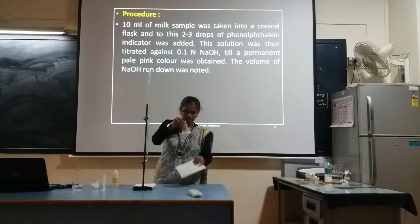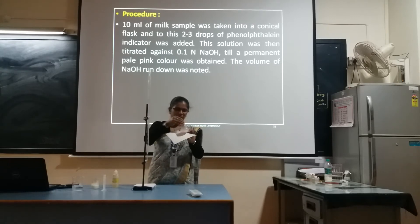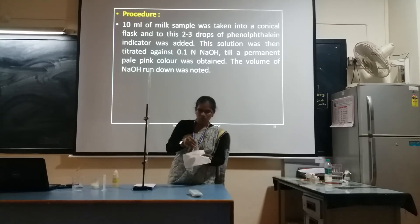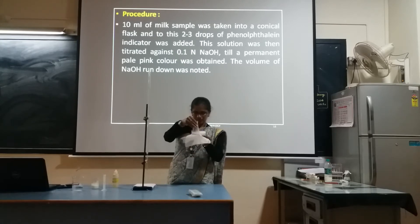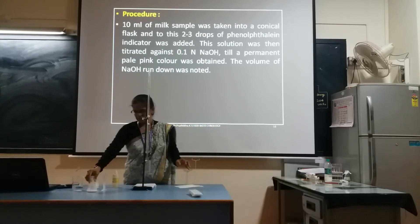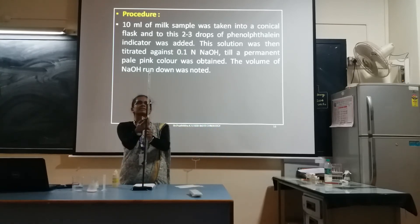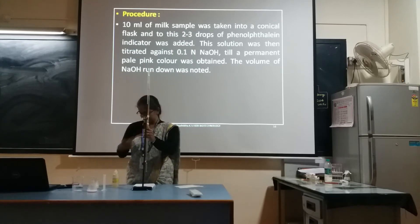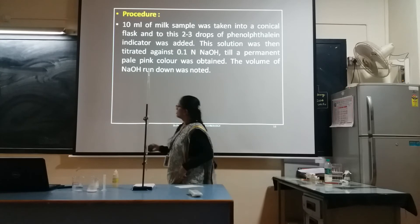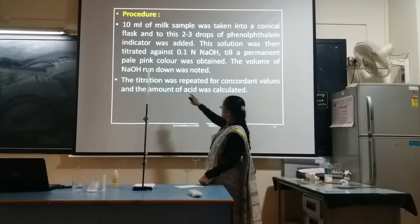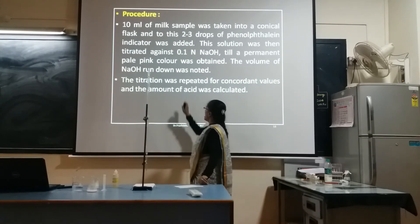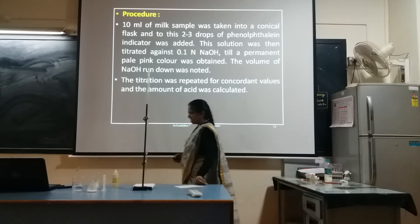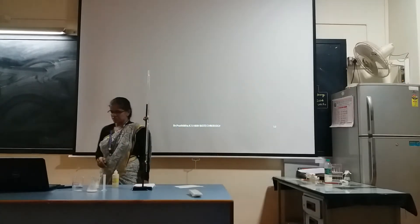Now I am getting the permanent pale pink colour here. Against a white background you can check that it is a permanent pale pink colour. Once you get this permanent pale pink colour, record the result by keeping your eye level straight. The titration was then repeated for concordant values and the amount of acid was calculated using the formula.